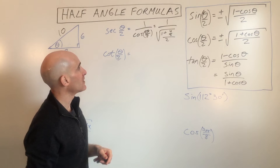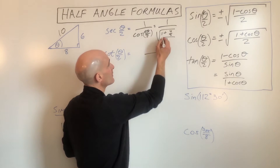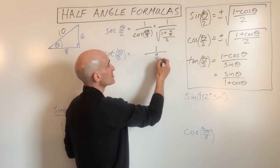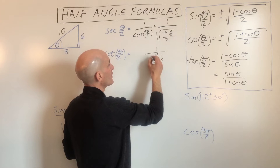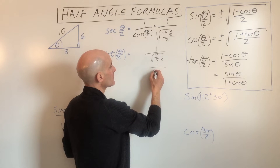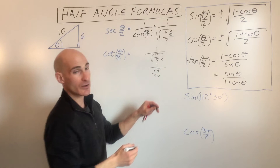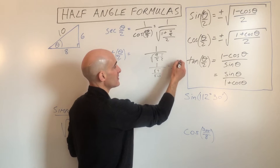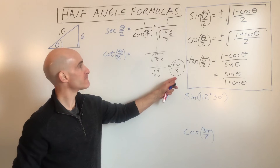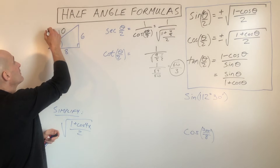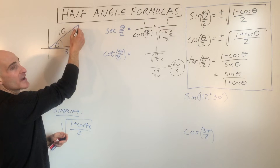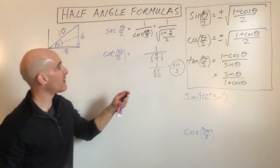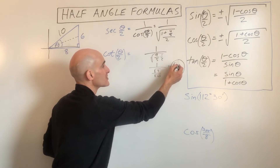We need to simplify: 1 is 5/5, plus 4/5 gives 9/5, divided by 2 — which is multiplying by one half. That gives one over the square root of 9/10, and taking the reciprocal gives √10 over √9, which is √10 over 3. Since the original angle is in the first quadrant and half that angle is still in the first quadrant, cosine is positive, so the answer is positive √10 over 3.